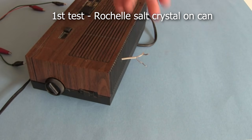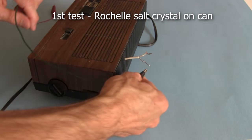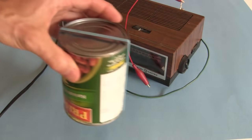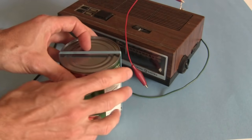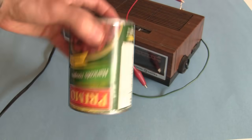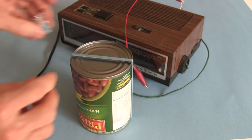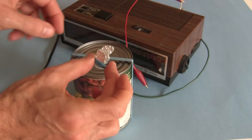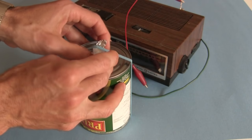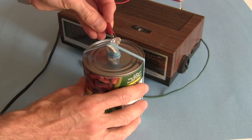The first thing to do is connect to the two wires that were going to the speaker. The first test involves using this can right here, it's just a normal can. I put an elastic band around it so that I can attach the Rochelle salt crystal to the top. Then I connect up the two wires.